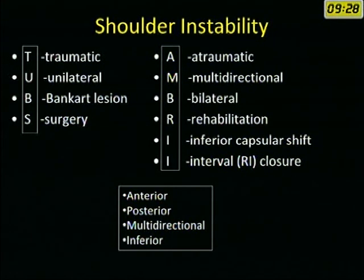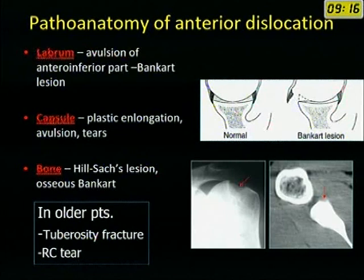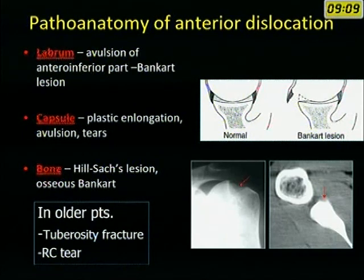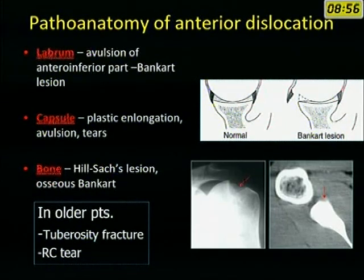Instability is also divided according to direction. The anterior instability is in fact antero-inferior. In anterior instability the labrum is avulsed from the antero-inferior part of the glenoid, which is called a Bankart lesion. The capsule undergoes plastic elongation, avulsions, or tears. There is a defect on the humeral head posteriorly called a Hill-Sachs lesion, and there could be avulsion of the bony antero-inferior rim of the glenoid along with the labrum, called an osseous Bankart.